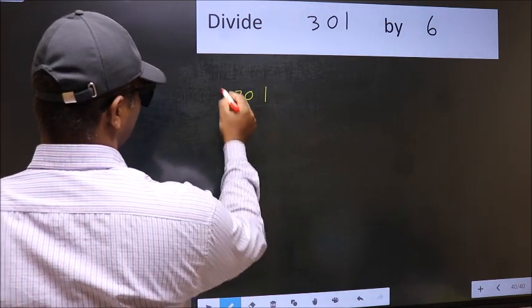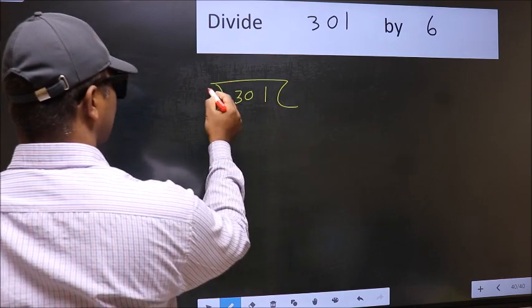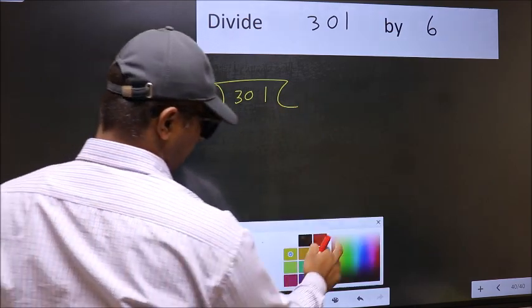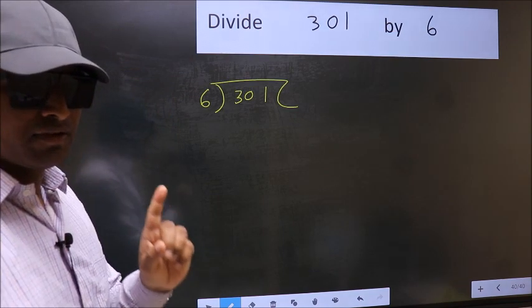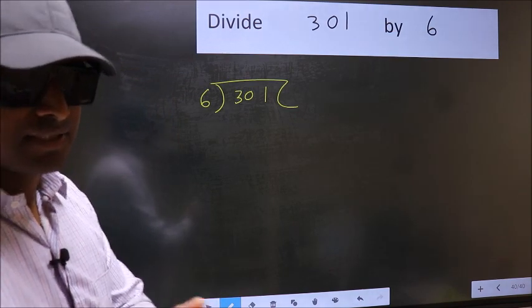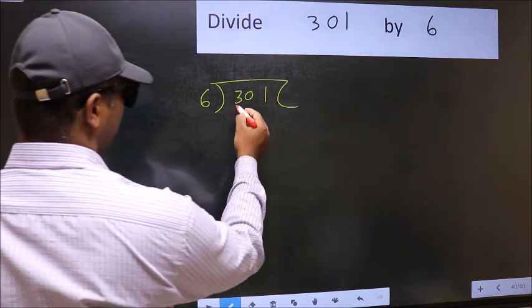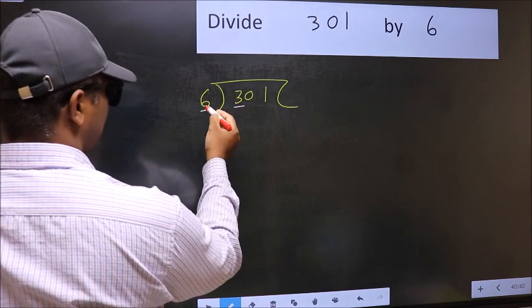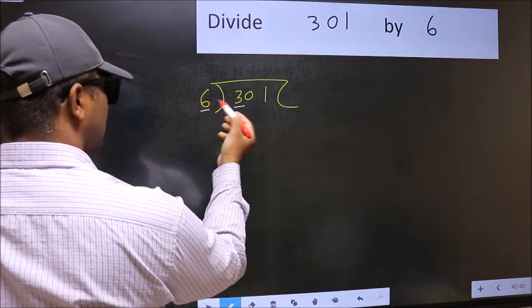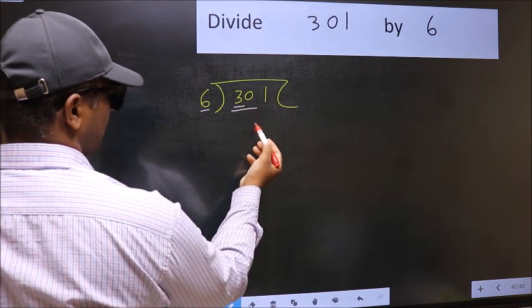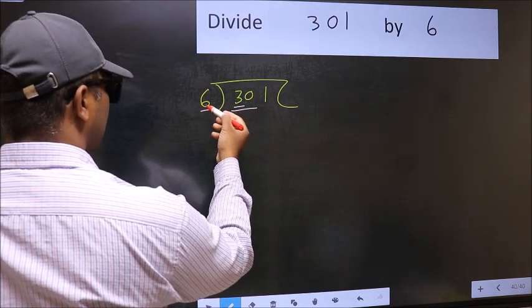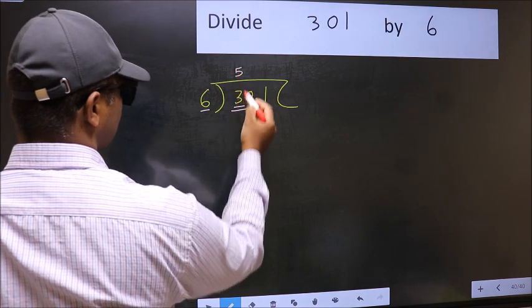301 and 6 here. This is your step 1. Next, here we have 3 and here 6. 3 is smaller than 6, so we should take two numbers, 30. When do we get 30 in 6 table? 6 times 5 is 30.